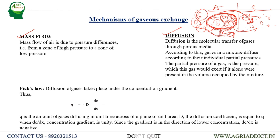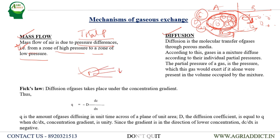In mass flow, air moves due to total pressure difference — from a zone of high pressure to a zone of low pressure. For example, when a balloon bursts, the high-pressure air inside flows out to the lower-pressure atmosphere. In diffusion, it is a molecular transfer of gases through porous media — only individual molecules transfer, not the gas as a whole.